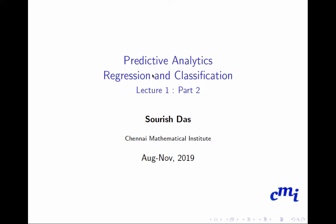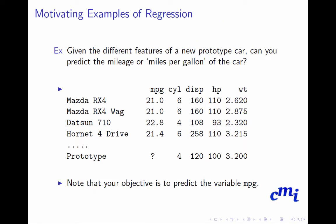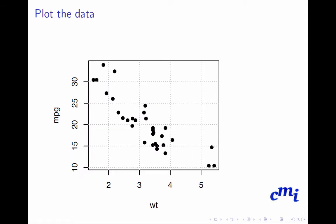Welcome back to Part 2 of Lecture 1. We will now start our discussion on regression models. In the previous part we were discussing this problem: we are given different features of a new prototype car — can you predict the miles per gallon of the car? We had a dataset with different models, their MPG, and different engineering features, and from there we want to predict the MPG for a new car. So from the design features we want to estimate or predict the miles per gallon. We typically always start with some visualization methods.